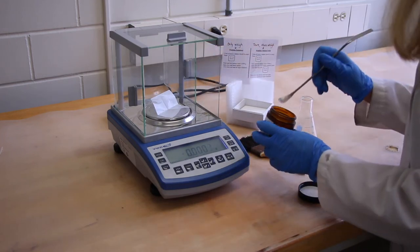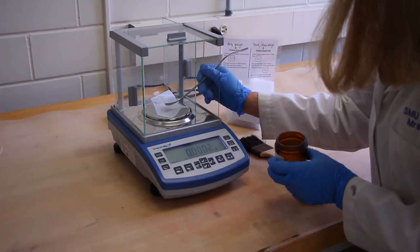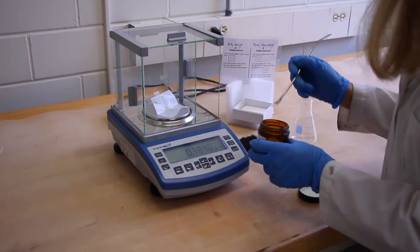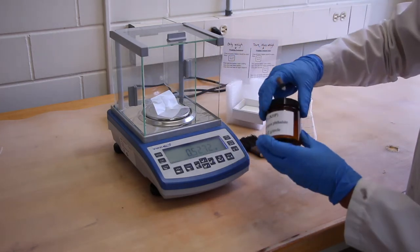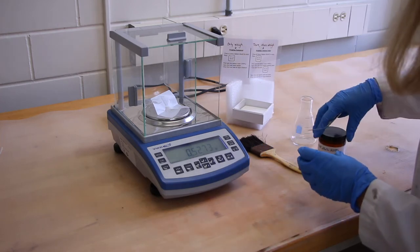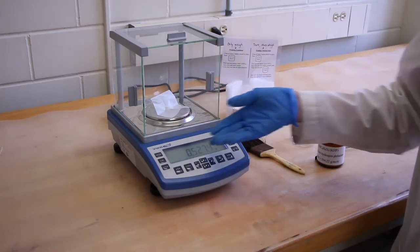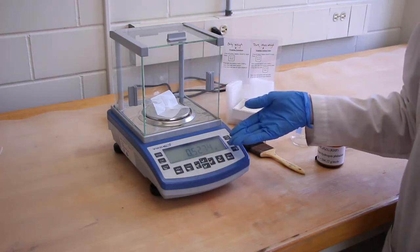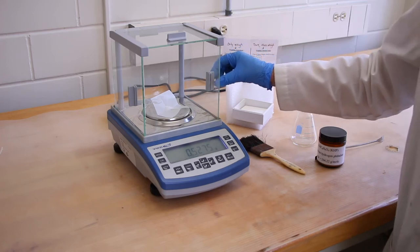I can open up the door and spoon some of the solid that I will be using onto the weigh paper, close the door, and we can read the balance. When you're ready to take it out, it's a very easy thing to do now that we've folded our weigh paper.